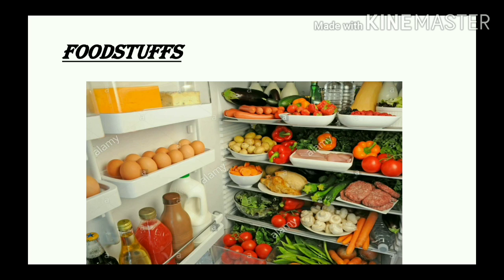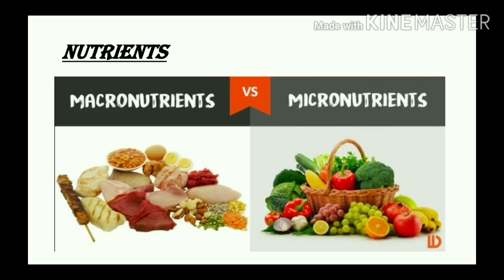Every day we have meals — breakfast, lunch, evening snacks, dinner, and in between some foodstuffs as well. We get several types of nutrients from foodstuffs. Nutrients are anything that nourishes a living being; we humans get nutrients from what we eat. A substance or ingredient that promotes growth, provides energy, and maintains a healthy life is a nutrient.